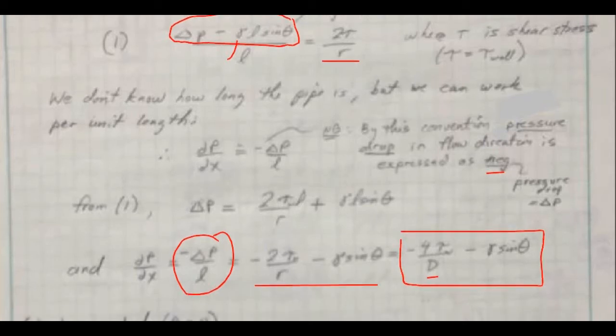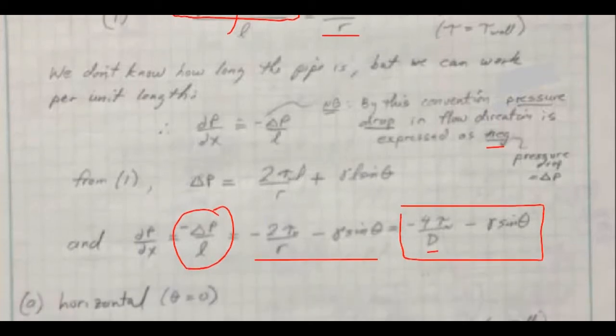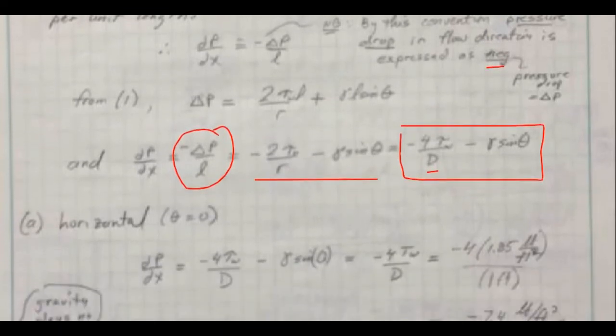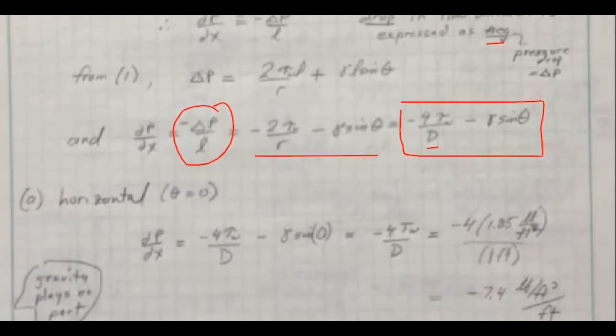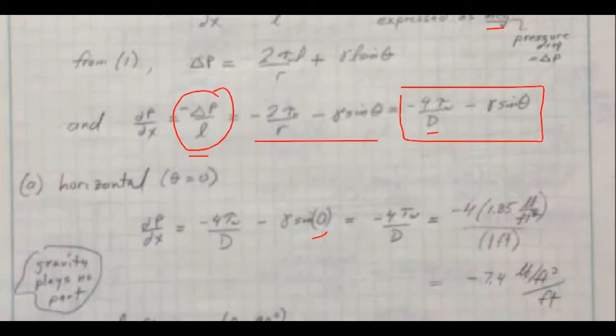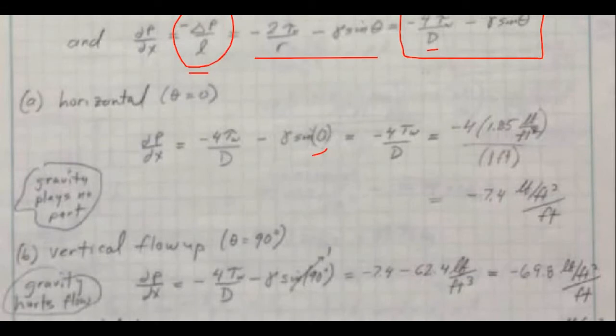We can now give it the three expressions. So for the horizontal case, sine theta is given with respect to the horizontal axis. So the first case is zero here. And so we simply get the four tau over d term, just plug in these values, and we get negative 7.4. Get some kind of interesting units, pounds per foot squared per foot. Remember, we did everything on a per foot basis here.